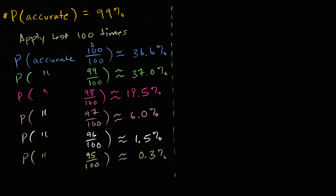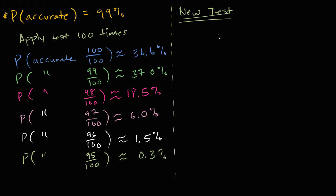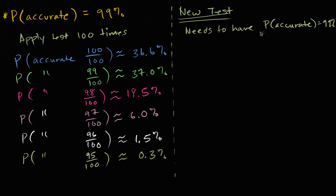Let's say that you have devised a new test — a new cholesterol test — and you don't know how accurate it is. You know that in order for it to be approved by whatever governing body, it has to have a probability of being accurate equal to 99%. You don't know if this is true; you just know that's what it needs to be.